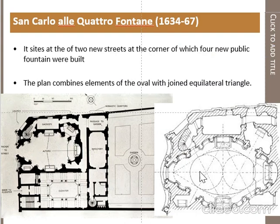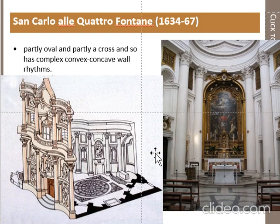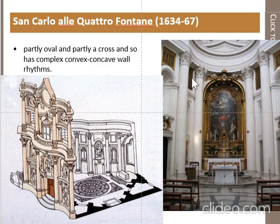The plan evolved from an equilateral triangle and two circles forming an ellipse, with one point as the entry and another as the apse. The plan is partly oval and partly cruciform, giving the facade a complex convex-concave wall rhythm, designed to add mystery and a chiaroscuro effect of light and shadow. The interior is white, as Borromini typically used brick and stucco work in his buildings.